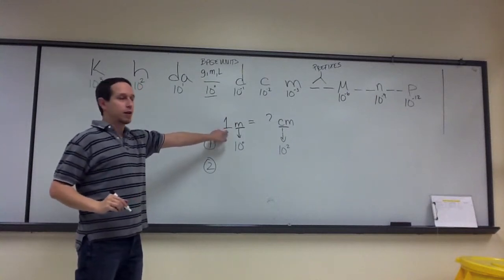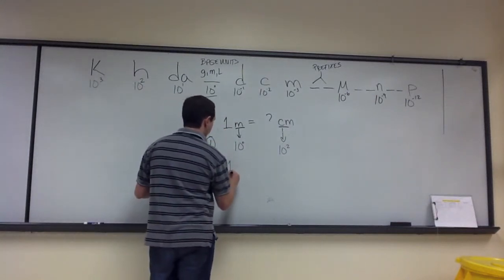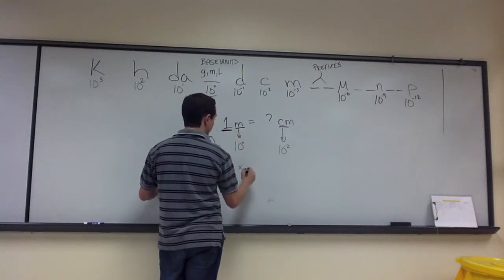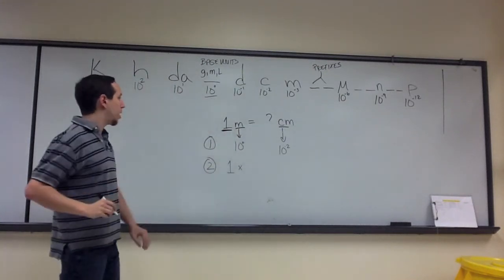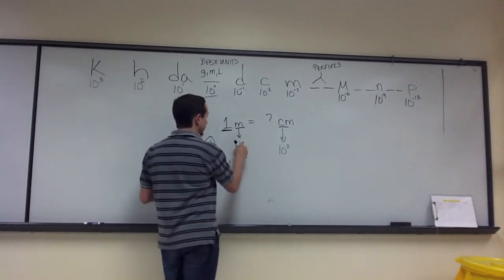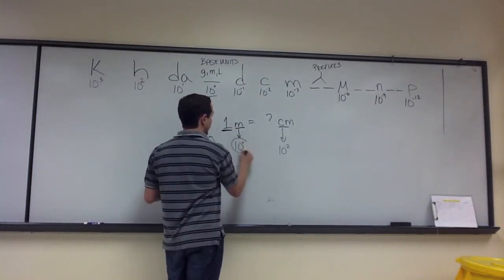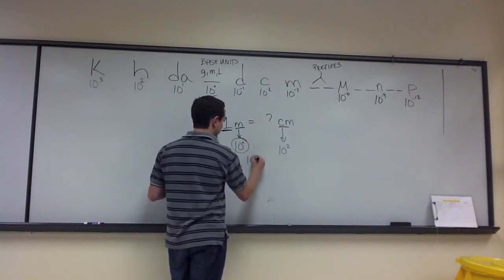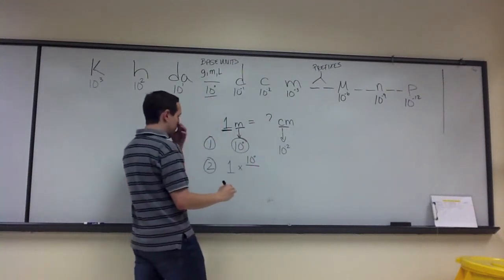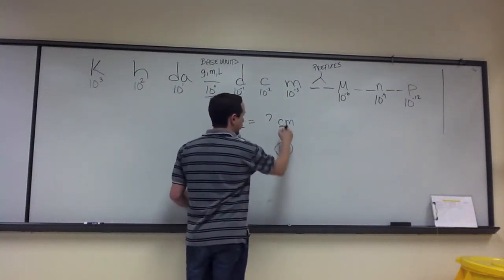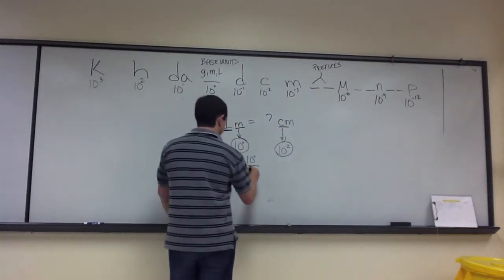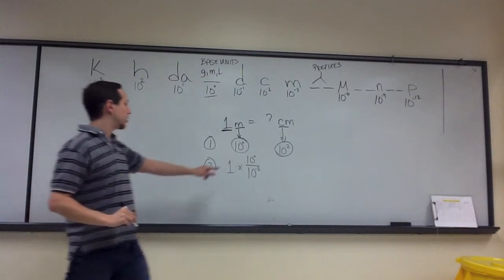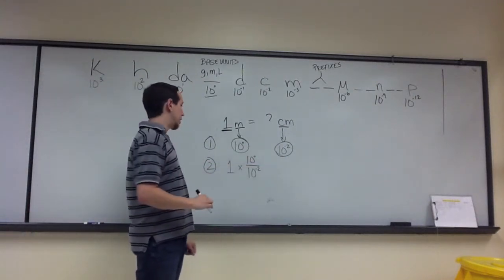You're going to change this number here. So, that is one, or whatever value it is numerically, times, and then what you're going to multiply it by is this base 10, or that is, this particular value for your starting prefix, 10 to the zero, divided by the numeric value that corresponds to your final prefix. So, I have 1 times 10 to the zero, divided by 10 to the negative two.